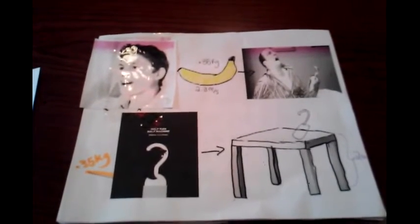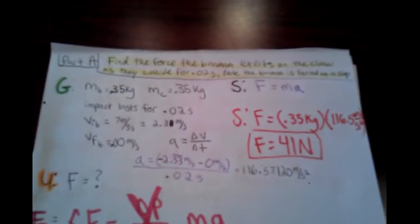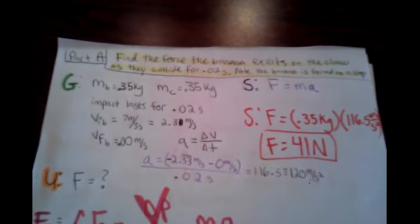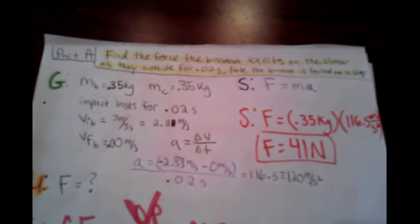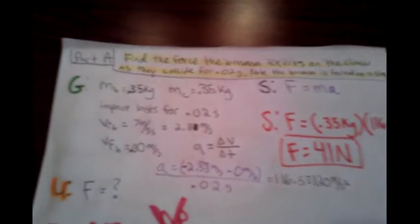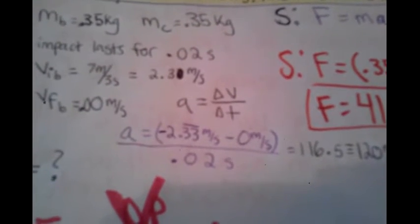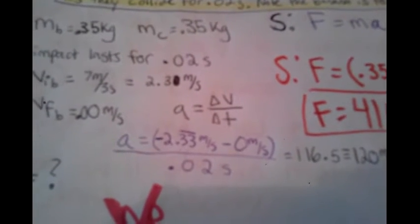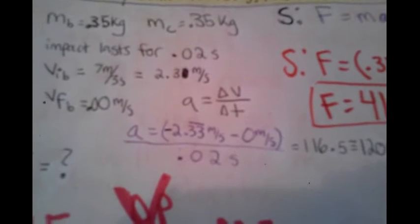Another note: this is a closed system. Part A: Find the force the banana exerts on the claw as they collide for 0.02 seconds. Note that the banana is forced to a stop after the collision. We also know that acceleration is the change in velocity over the change in time.